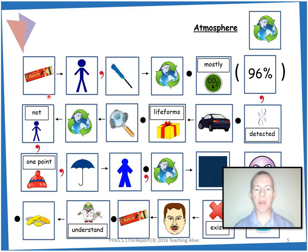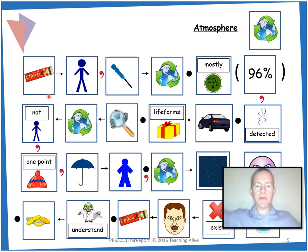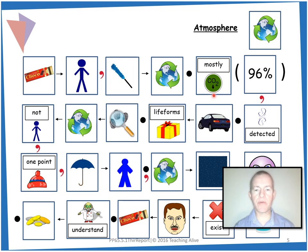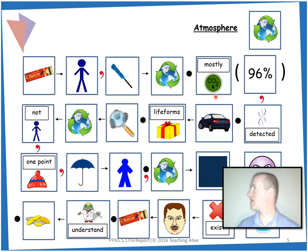Let's do that again: Mars has a thin, comma, dusty — pretend to dust — and atmosphere. Full stop. Next sentence: it is made up mostly of carbon dioxide. And for carbon dioxide, you can breathe out because we breathe out carbon dioxide. So: it is made up mostly of carbon dioxide.